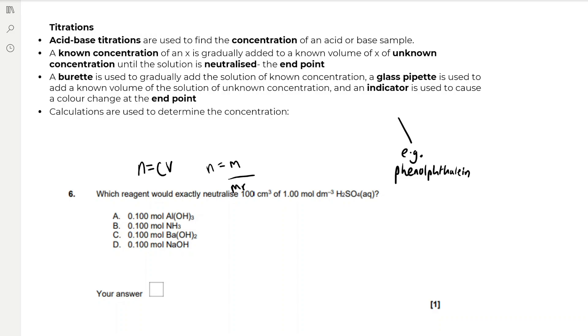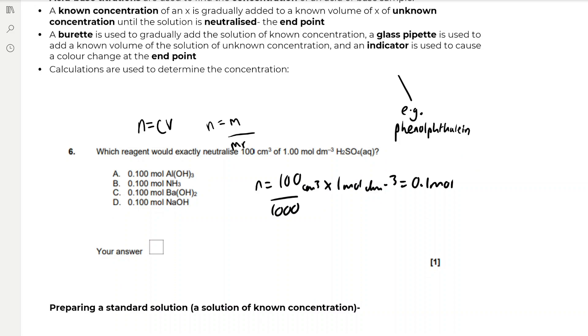We've got an example question. Which reagent would exactly neutralise 100 centimetres cubed of 1 mole per decimetre cubed H2SO4? We can first find the number of moles of H2SO4, which is 100 over 1000 to convert to decimetres cubed, multiplied by 1 mole per decimetre cubed, which gives us 0.1 moles. And then if we have a look at the formula of H2SO4, it's diprotic because it's got two H+ ions in its formula. So we need, for all of our potential reactants, we've got the exact same number of moles, 0.1 moles. So we need a dibasic reagent. And if we look at Ba(OH)2, that's the only one with two hydroxide ions for every molecule of it, so that is the correct reagent.